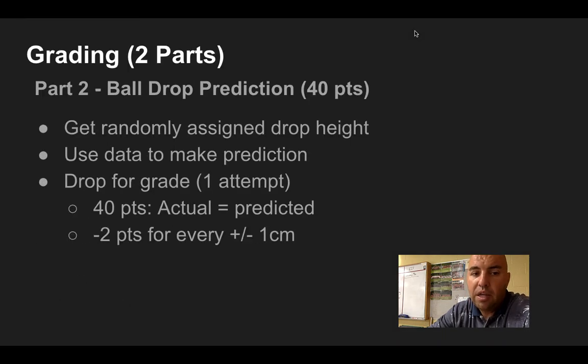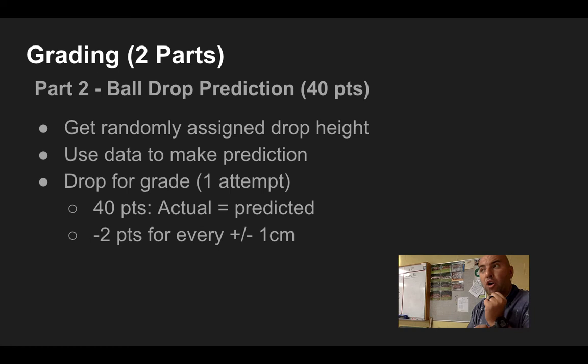The second part is the ball drop prediction. This is worth 40 points. This is where you take all that information that you collected. You get a randomly assigned drop height. You use that data to make a prediction, preferably using Desmos, hint, hint, nudge, nudge, wink, wink. And then you drop that puppy for a grade. You get one attempt. You get all 40 points when the actual height it bounces equals the predicted height. If you're above or below that, you lose two points for every centimeter off that you are.